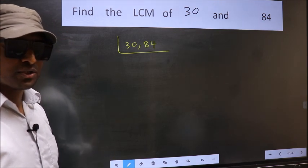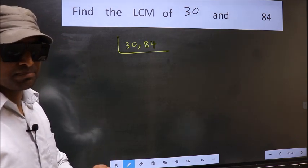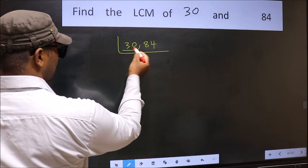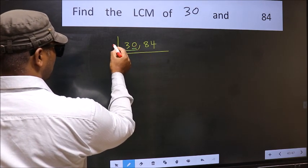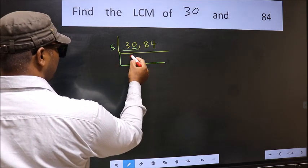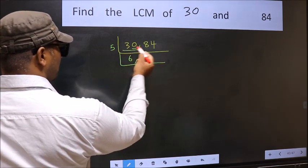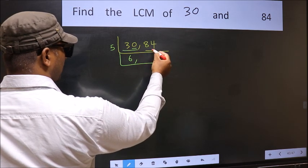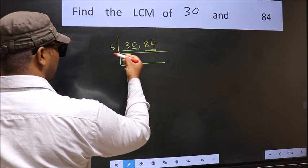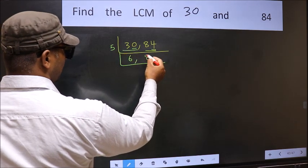Now you should focus on the first number which is 30 here. For this number, last digit 0, so directly take 5. When do we get 30 in 5 table? 5, 6, 30. The other number, 84. Last digit neither 0 nor 5, so this is not divisible by 5. So we write it down as it is.